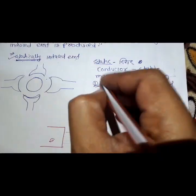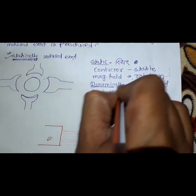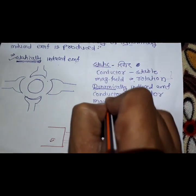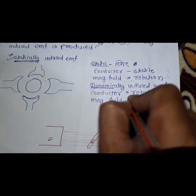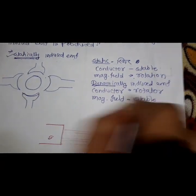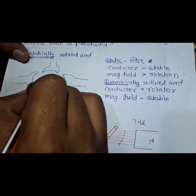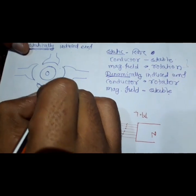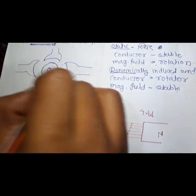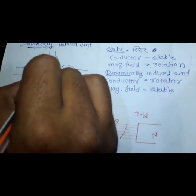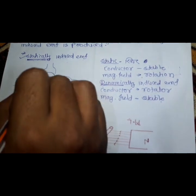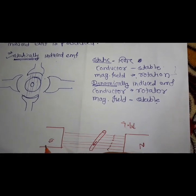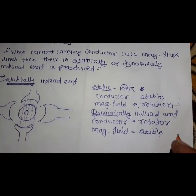In dynamically induced EMF, the conductor rotates and the magnetic field is stable. We have to look at the front view — here is the pole, and the armature is rotated between the poles. When the flux lines cut the rotating armature conductor, the dynamically induced EMF is produced.